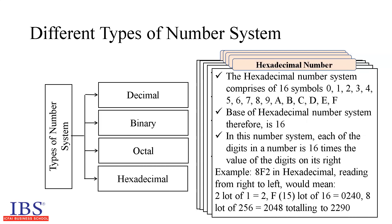The hexadecimal system comprises 16 digits, that is 0 to 9 and A, B, C, D, E, F. The base of the number system is therefore 16. Each digit in a number is 16 times the value of the digit on its right. For example, 8F2 in the hexadecimal number system, reading from right to left, means 2 lots of 1 equal to 2, F (15) lots of 16 equal to 240, and 8 lots of 256 equal to 2048, which amounts to 2290 in the decimal system.